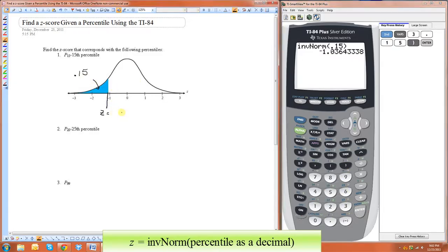So this value is negative 1.036. And it's pretty much the same thing for all the others, so if you wanted to do a 25th percentile...